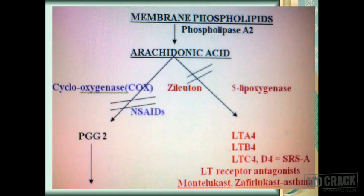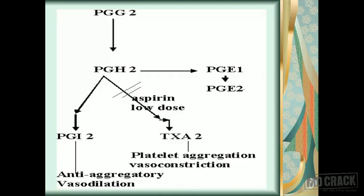The next diagram takes you ahead of PGG2. From prostaglandin G2, you get synthesis of prostaglandin H2, and this PGH2 gets converted into various substances. In one pathway, prostaglandin H2 can be converted into prostaglandin I2 — PGI2, or prostacyclin. On the other side, it synthesizes thromboxane A2, TXA2.